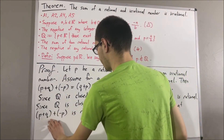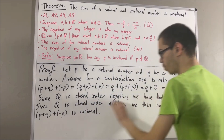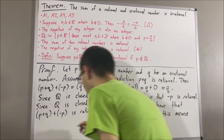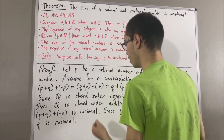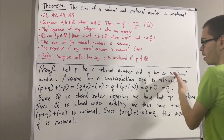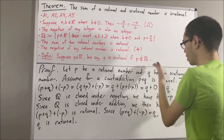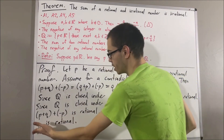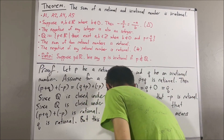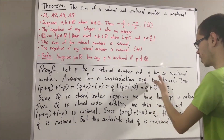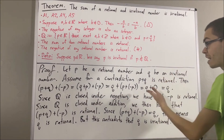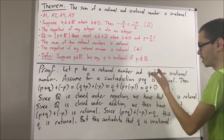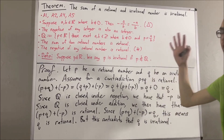But since p plus q plus negative p is equal to q, we can replace p plus q plus negative p with q. So this tells us q is rational. But this contradicts the fact that q is irrational, because by definition of an irrational number, since q is irrational, that tells us q is not rational. So we have a contradiction: q is rational and q is not rational. Our assumption that p plus q is rational led us to a contradiction. So we must instead have that p plus q is not rational. But by definition of an irrational number, that's precisely what it means for p plus q to be irrational. So we can conclude that p plus q is irrational, and this completes the proof.